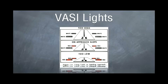If you're on approach slope, you would see white over red, and if you're too low, you would see all red lights.